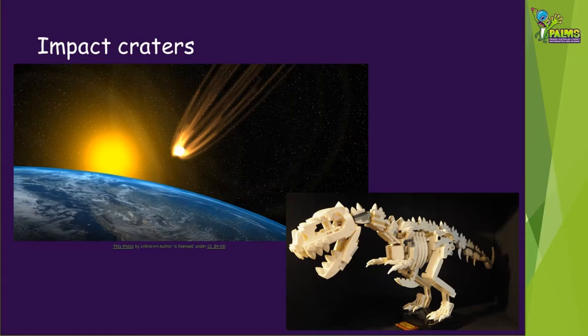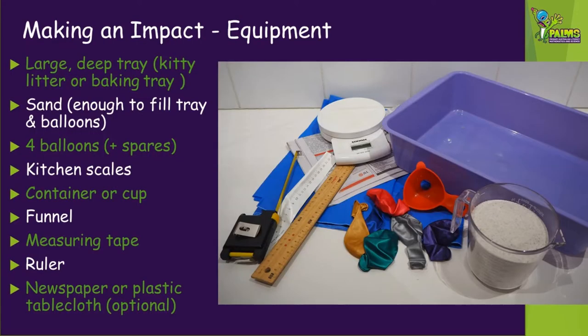We're going to show you how to make and measure your own impact craters. To make and measure some impact craters you'll need the following equipment: a large deep tray like a clean kitty litter tray or baking tray, enough sand to fill the tray, and also some balloons — four balloons plus a few spare in case of breakages — some kitchen scales, and a container or cup to weigh your sand into.